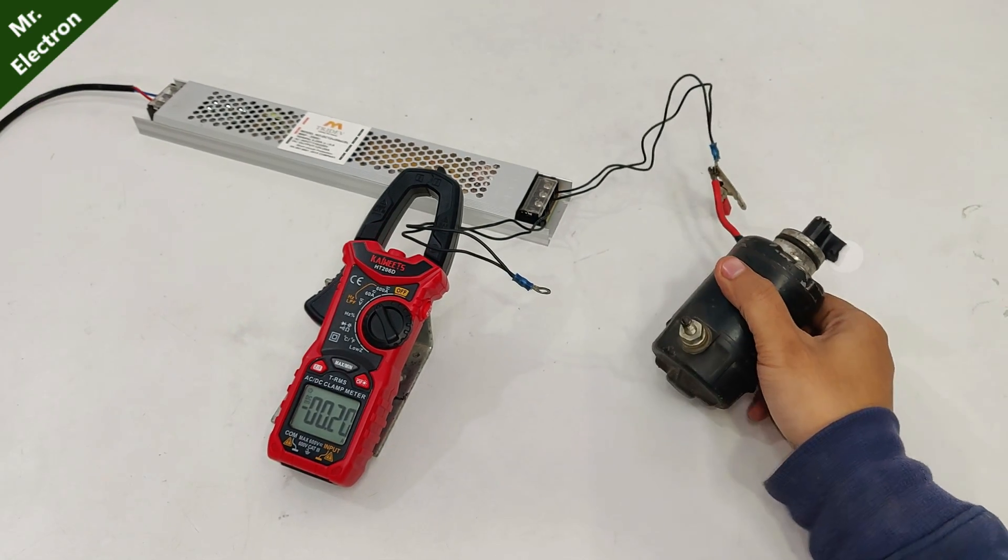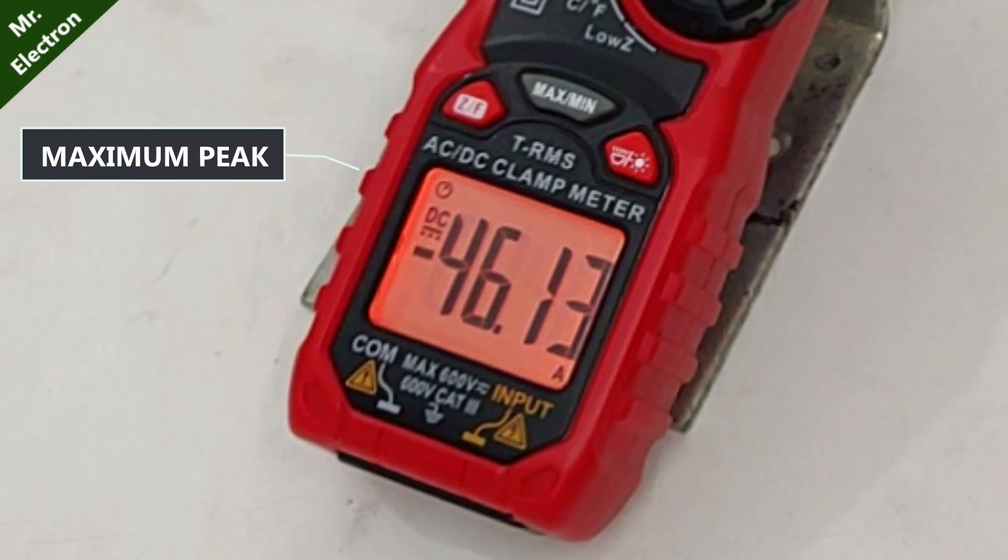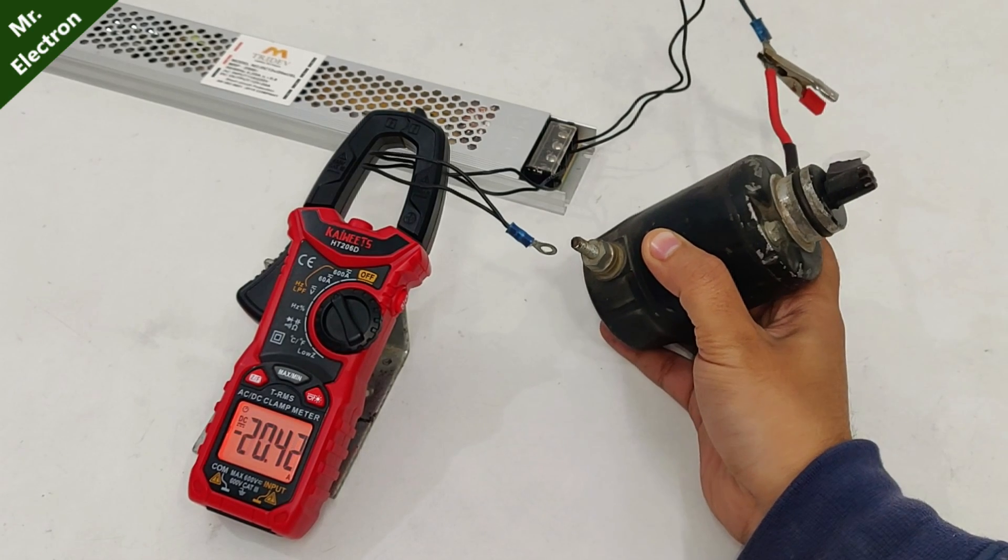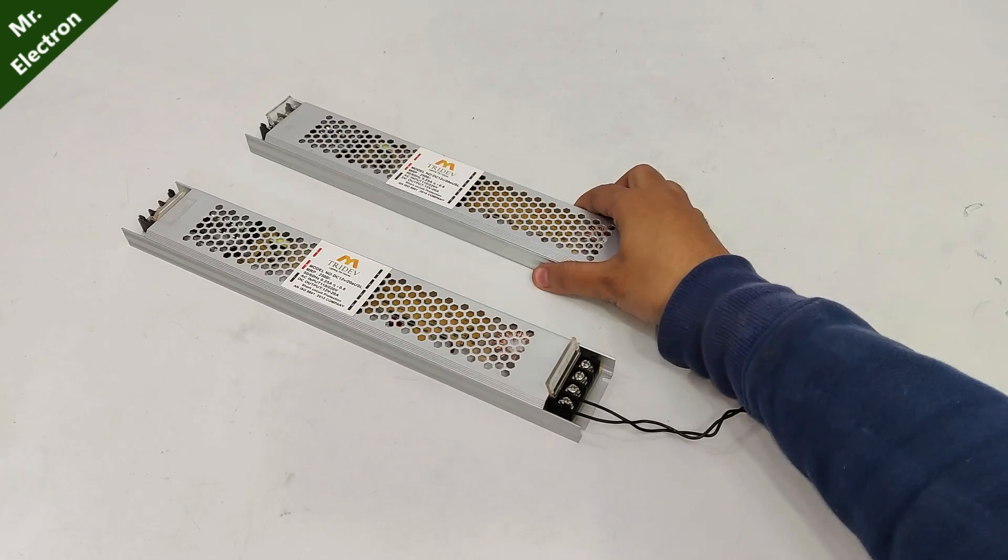So this power supply is rated at 20 amperes and with a maximum peak of 50 amps and stabilizing at 20. So it's working great and this completes the high current testing. Let's move on further.